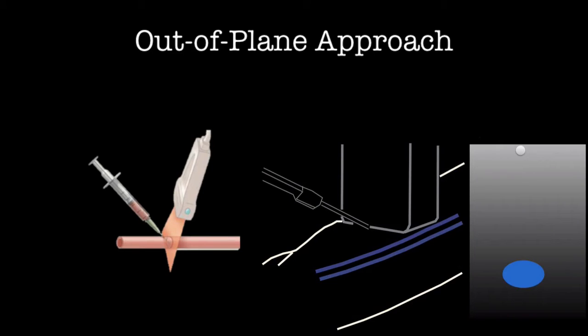An error may occur with this approach in that the needle tip may not be visualized all the way down to the vein. This occurs when the probe is not advanced ahead of the needle and the needle tip is lost in the soft tissue.